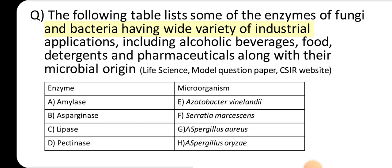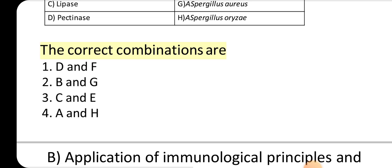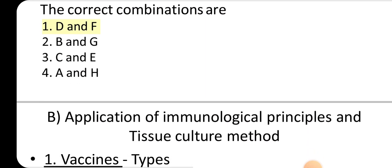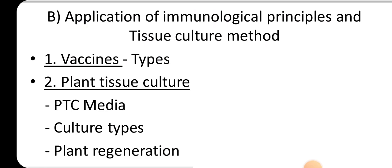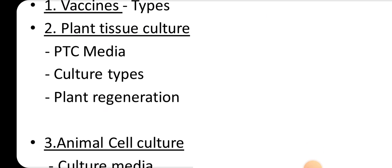Bacteria having wide variety of industrial applications, including alcoholic beverages, food, detergents and pharmaceuticals along with their microbial origin. Life Science Model Question Paper, CSIR website. The correct combinations are: 1. D and F, 2. B and G, 3. C and E, 4. A and H.